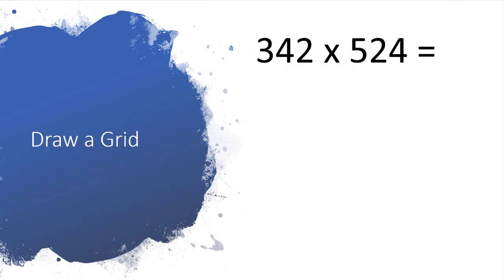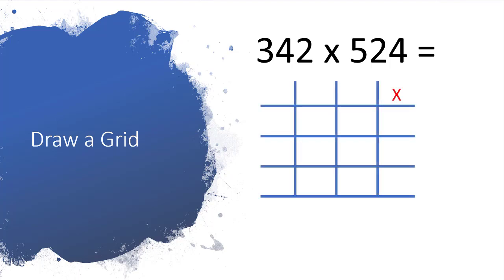So the first thing to do is to draw your grid. You need to draw a grid so that you can put the numbers 342 in and 524. So let's just draw the grid. There's your grid there.